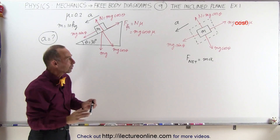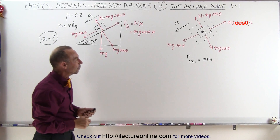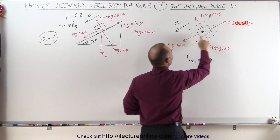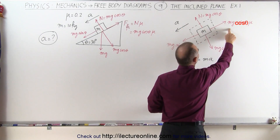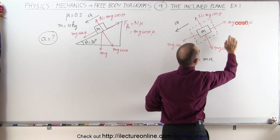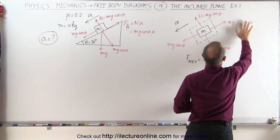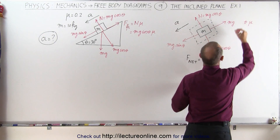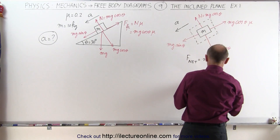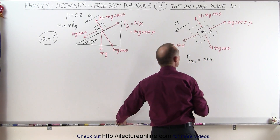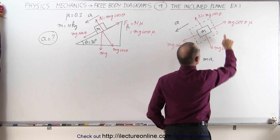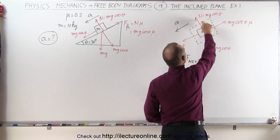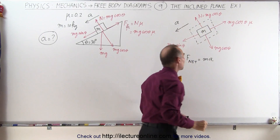Those are now the only resulting forces. Notice that mg sine theta aids the acceleration, and mg cosine theta times mu — because it's the normal force times mu — is in the opposite direction, opposing the acceleration. Notice that the perpendicular force components simply cancel each other out.